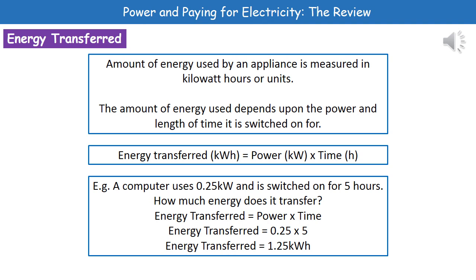This leads us into our second calculation, again found on page 2 of the exam booklets, so you don't have to memorize it. The energy transfer in kilowatt hours equals the power in kilowatts times the time in hours. For example, a computer uses 0.25 kilowatts and is switched on for five hours. How much energy does it transfer?